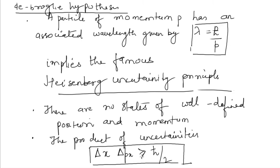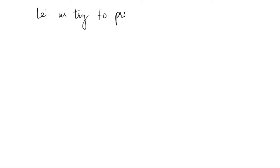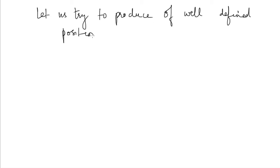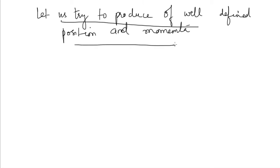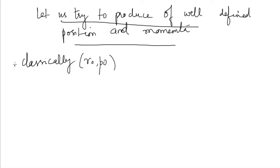Now let us try to produce such a quantum state and then see whether this principle holds or not — a state of well-defined position and momenta. Classically, you know that if a particle is rolling on a slope or a car is running on the road, then at a certain position r0 we know the momentum of the car. So classically, any state has a well-defined position and momenta: you can have r0, p0. Now let's see what happens when I try a similar thing in the quantum case.